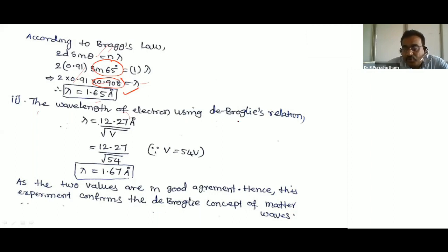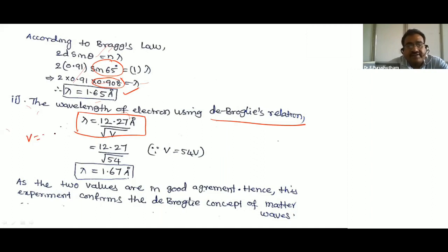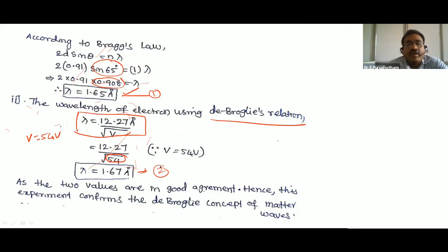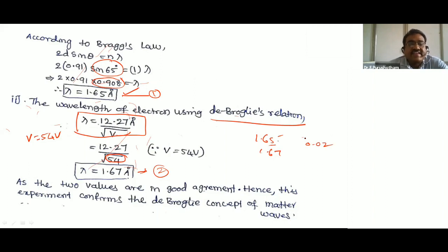Using the de Broglie relation, the wavelength of the electron is λ = 12.27 / √V Ångströms. Substituting V = 54 volts, we get λ = 1.67 Ångströms. From equation 1 (Bragg's law) we got 1.65 Å, and from equation 2 (de Broglie relation) we got 1.67 Å. The two values are in good agreement (difference of only 0.02 Å), hence this experiment confirms the de Broglie concept of matter waves.